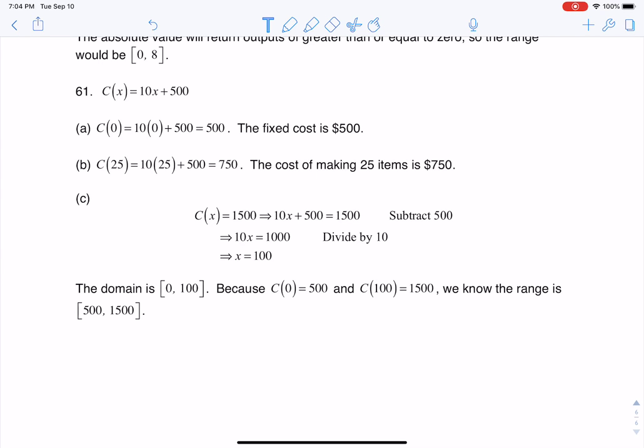Hey, Math 31, I had a question on how you do number 61 here, so I thought we would take a look. They give you this cost function, and they say the cost in dollars of making x items is given by this function.